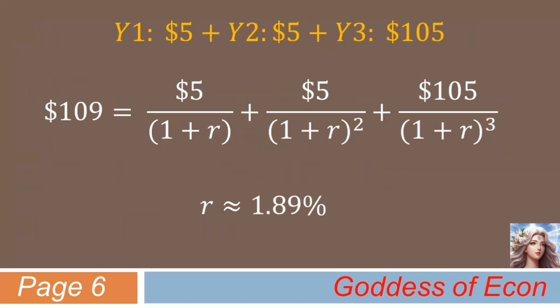This time as well, it was close enough. The true YTM is about 1.89%, which is indeed close to our approximation of 2%. By watching this video, you guys have truly mastered the way to calculate the YTM in your head. But I would like to emphasize that this is just a rough, imprecise estimation method.